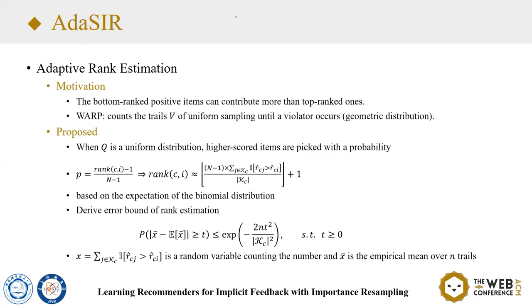Compared to WARP, whose approximation of rank is based on the expectation of the geometric distribution, our proposed approximation is based on the expectation of the binomial distribution. Therefore, it is possible to derive the error bound of the rank estimation. X is a random variable counting the higher-ranked items than i, and the empirical mean is taken over n samples. So the sampler can efficiently estimate the rank of positive items such that bottom-ranked items are more emphasized during training.